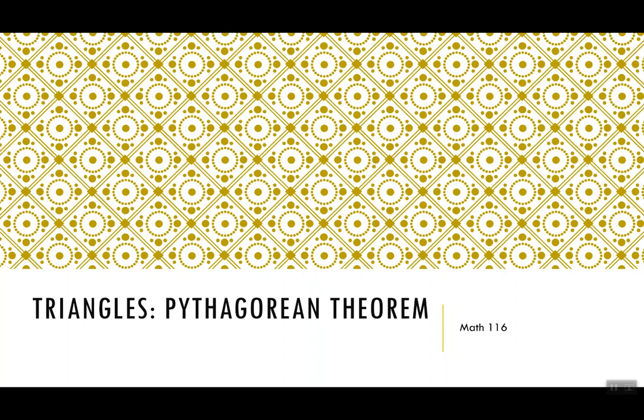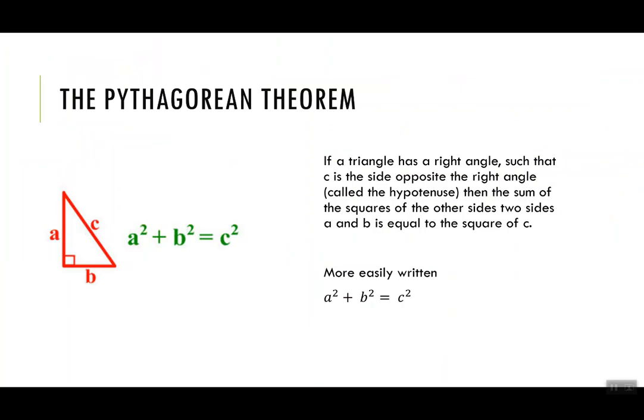Today we're going to talk about the Pythagorean Theorem. The Pythagorean Theorem says if a triangle has a right angle, such that C is the side opposite the right angle, which we call the hypotenuse, then the sum of the squares of the other two sides, A and B, is equal to the square of C.